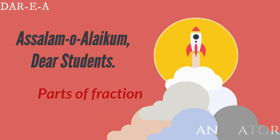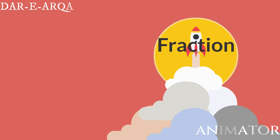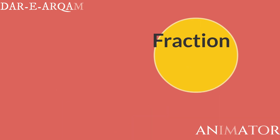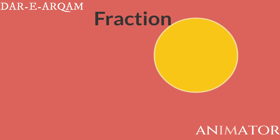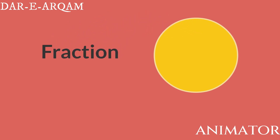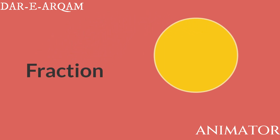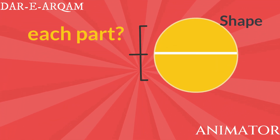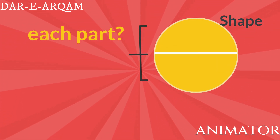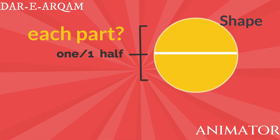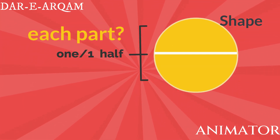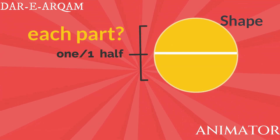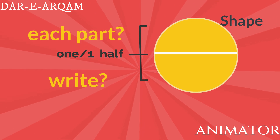Different shapes can be divided into different parts. Here we will take two shapes, the first one will be the circle. If we divide a circle into two equal parts, each part of this circle will be called as one half, because now this circle is divided into two parts. So now we will write each part as one by two.